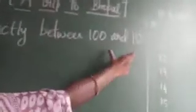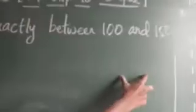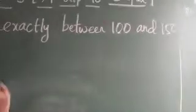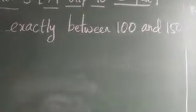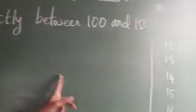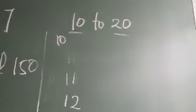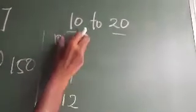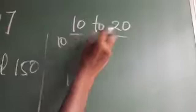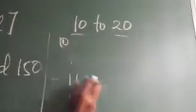What is the exact middle number between 100 and 150? Now we can solve this question. Before this, see the simplest form. Here I have taken two numbers: one is 10 and another one is 20. Now I have to find the middle number between 10 and 20. So we will find out.